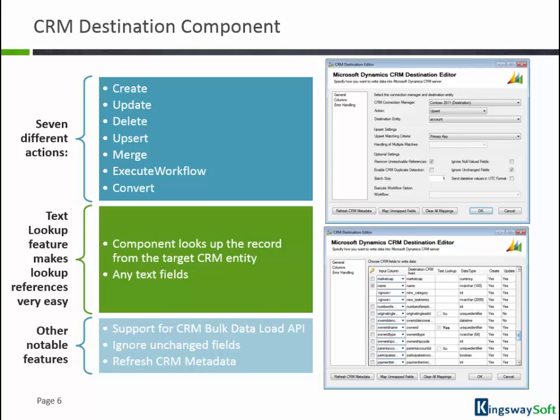We also have many other advanced options specifically designed to help you with your integration scenarios. For example, we offer support for CRM bulk data load API. This option allows you to specify how many records you want to submit to the CRM server in a batch using the bulk data load API. This can significantly boost your data load performance, particularly if you're using CRM online. Our ignore unchanged fields option can also be used to ignore any unchanged fields when writing to CRM, so that it can avoid triggering any unnecessary plugins or workflows.